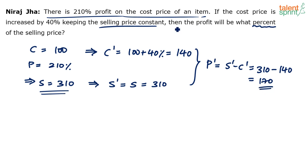But he's not asking us to find out the profit. He says the profit will be what percent of the selling price. Just treat this question like X is what percent of Y - that's X by Y times 100. So profit will be what percentage of selling price? Profit by selling price times 100, P dash by S dash times 100. What is P dash? 170. What is S dash? 310 times 100.